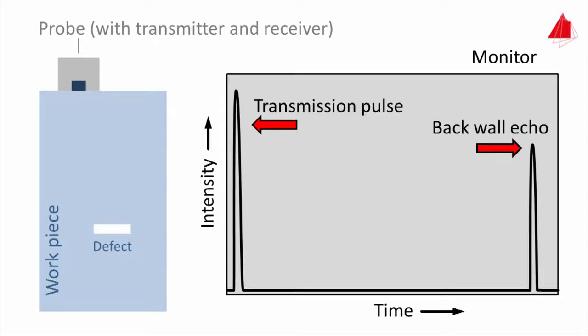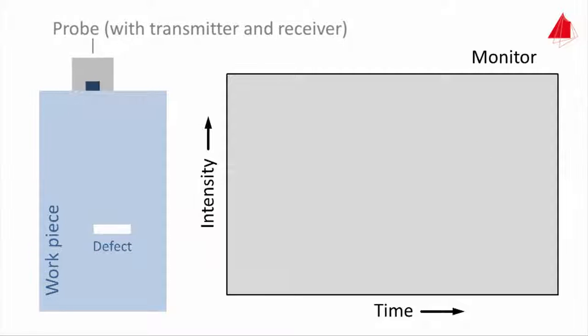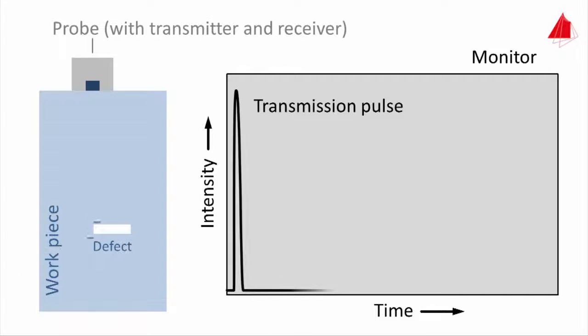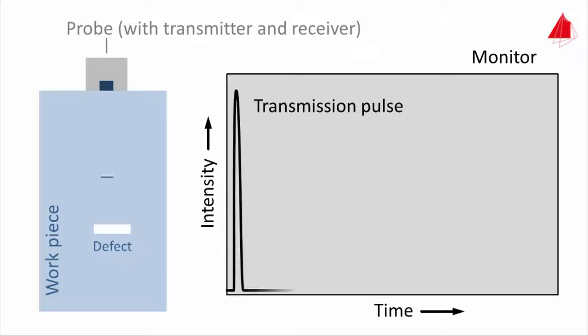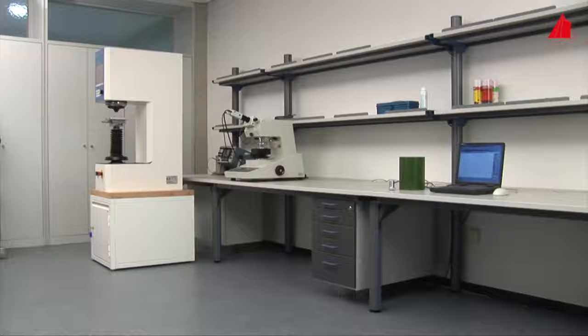Moving the probe towards the right leads to an additional echo created by the defect. Even further towards the right, only the defect echo is visible apart from the transmission pulse.